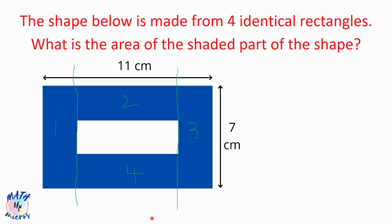With this concept in mind, have a closer look at the right rectangle, which is number three. It's obvious that the length of this rectangle is 7 centimeters. Since all four rectangles are identical, the length of all the rectangles is 7 centimeters. So we have found the length.